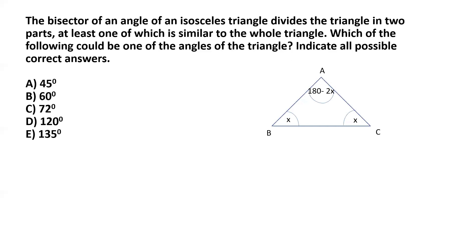In the problem it is said that the bisector of one of those angles divides the triangle in two parts, and it is not specified which angle's bisector. So in the first scenario, I will assume that it's the bisector of the unequal angle — in this case it's angle BAC — so let's draw the bisector of angle BAC; it meets BC at the point D.